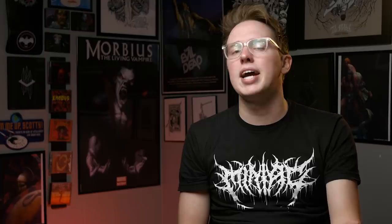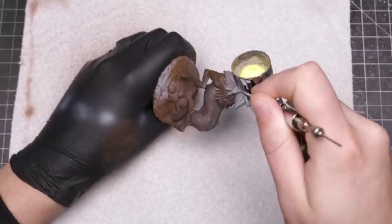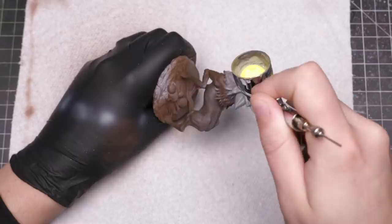Say you base coated something in a brown tone and you want to highlight it. Mix in white and maybe a touch of yellow ink to your original base tone and bang! You have a nice highlight color that's applying more smoothly than if you had used white and yellow acrylic paints.